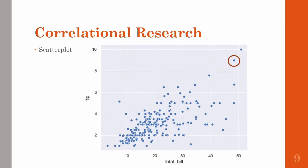And that same person tipped their waiter, shown on the y-axis, somewhere around $9. We can see here that there's a relationship between the total amount of a bill and the tipping amount that's left.